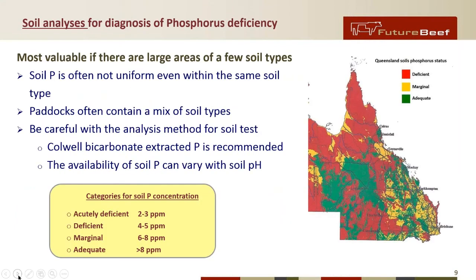Soil testing is of somewhat limited value because soil P is not uniform even within the same soil type, and paddocks often contain a mix of soil types. If cattle have access to some better country in conjunction with poor country, they might well be able to meet their requirements due to time spent on the better country. When looking at soil tests, the Colwell bicarbonate P test is the recommended method, and it's important to think about how soil P availability can vary with pH. Generally, soil P levels around two to three indicate an acutely deficient situation; four to five is deficient; six to eight is marginal; and above eight parts per million you're unlikely to be experiencing a phosphorus problem in cattle.